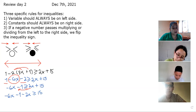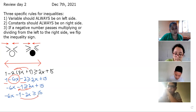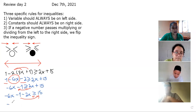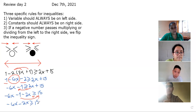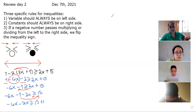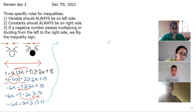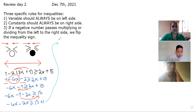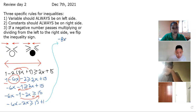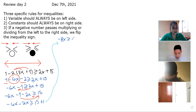We're going to pass the constant negative 1 to the right side. Since it is negative, it goes positive. So we have negative 6x minus 2x greater than or equal to 15 plus 1. Simplifying: negative 6x minus 2x gives us negative 8x, because same signs we add and keep the sign. And 15 plus 1 gives us 16.